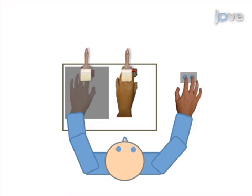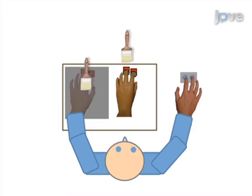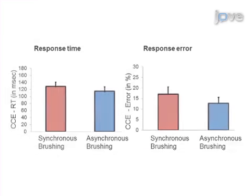Brush stroking is repeated before every trial, and this is repeated at least 60 times. The final step is to run a control condition where the illusion is not induced using asynchronous brush stroking. Ultimately, the cross-modal congruency task is used to show changes in multi-sensory processing that are critical for modulations of body representations, as in the rubber hand illusion.